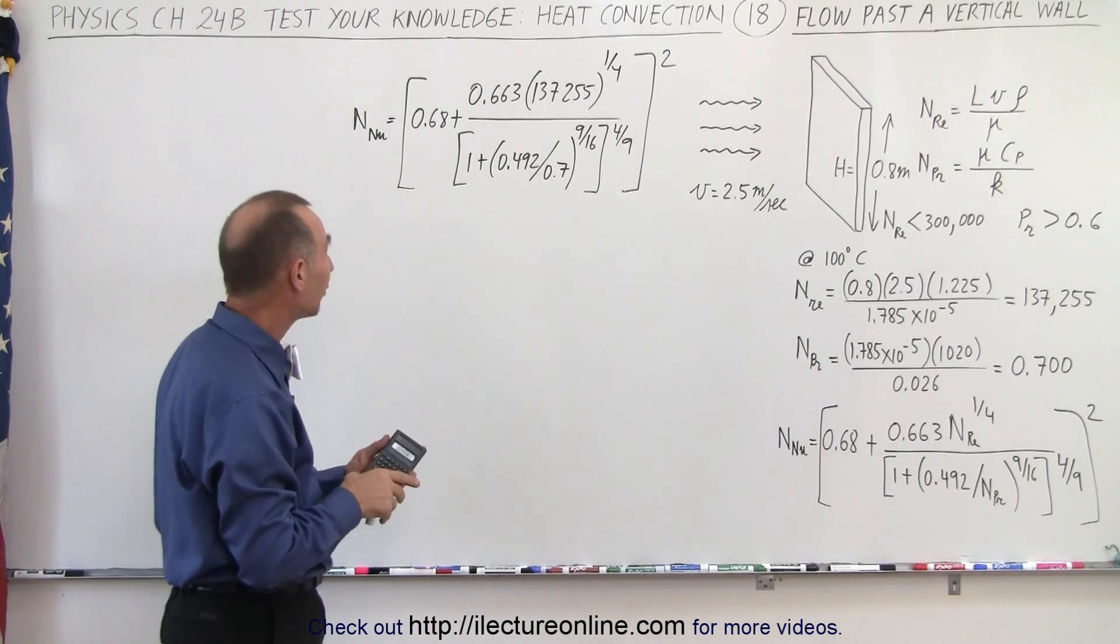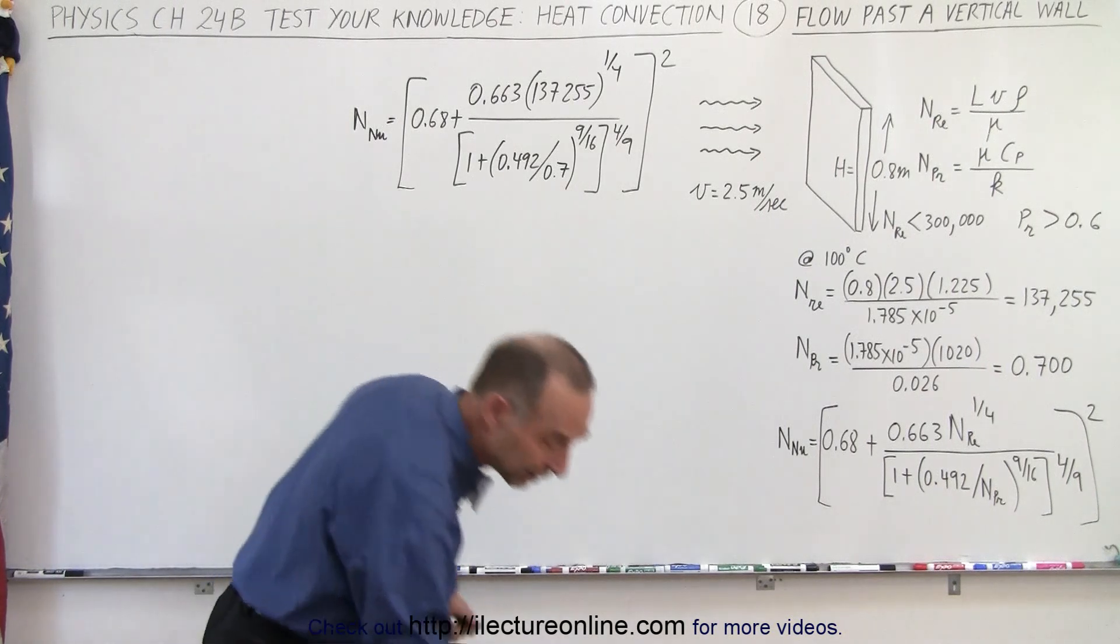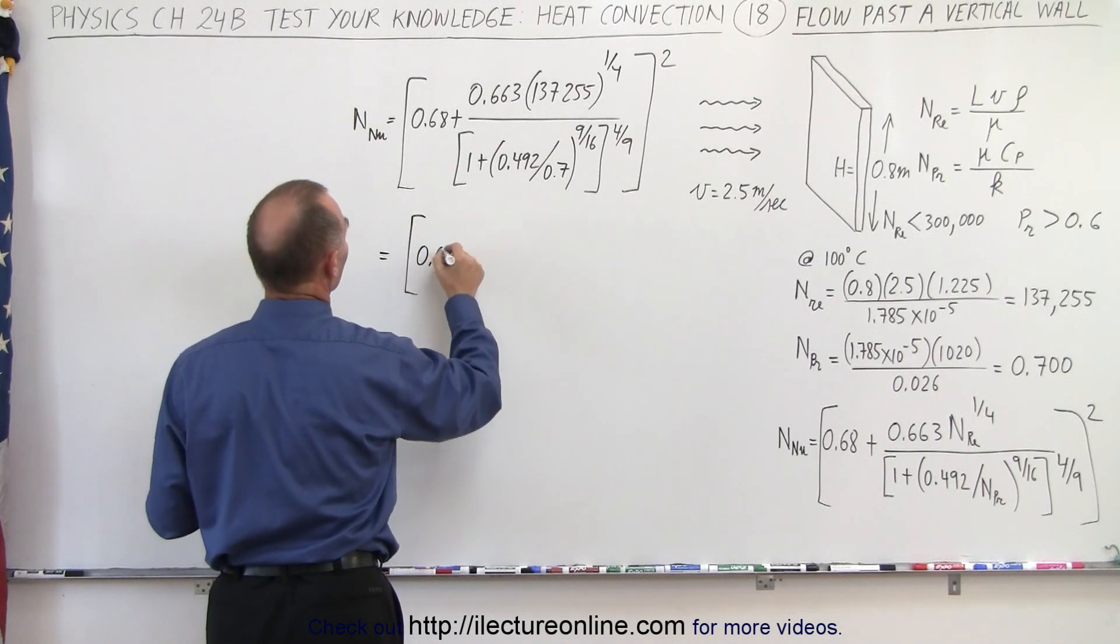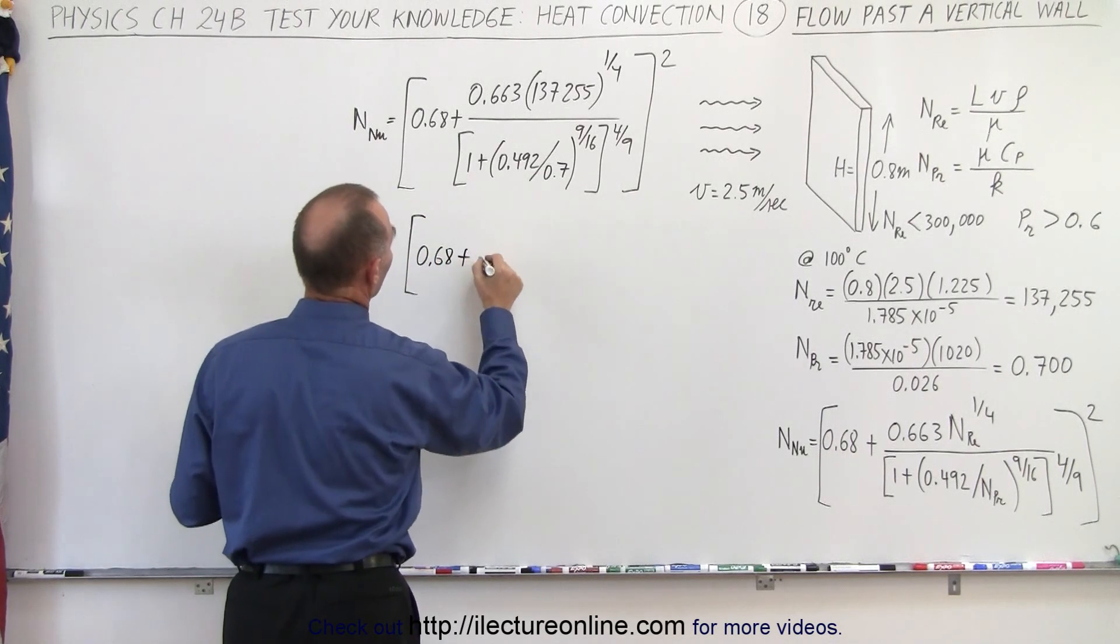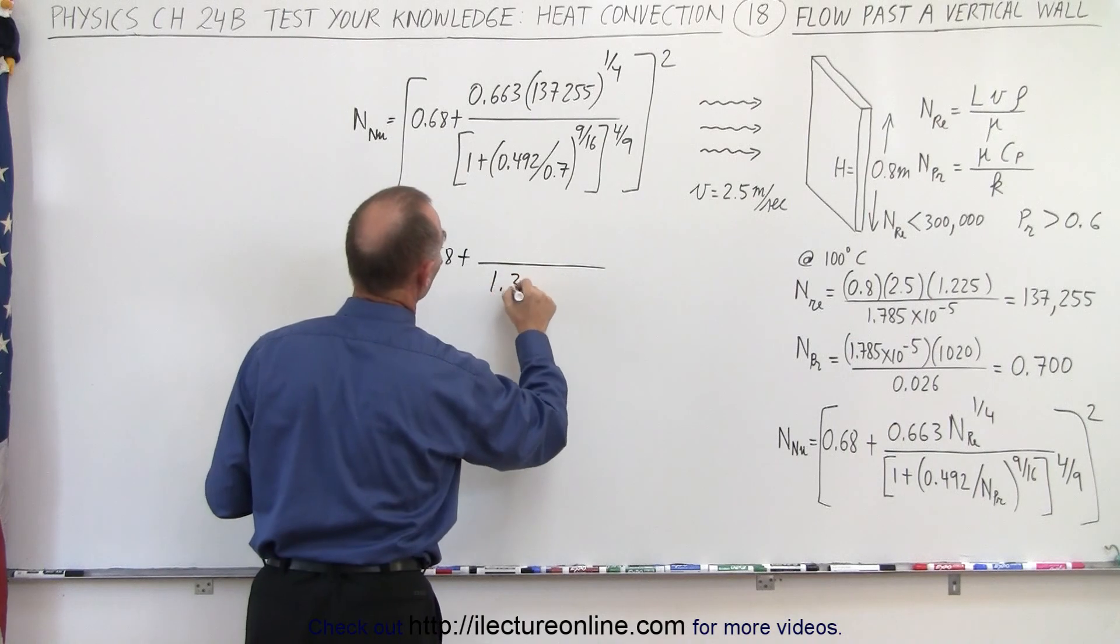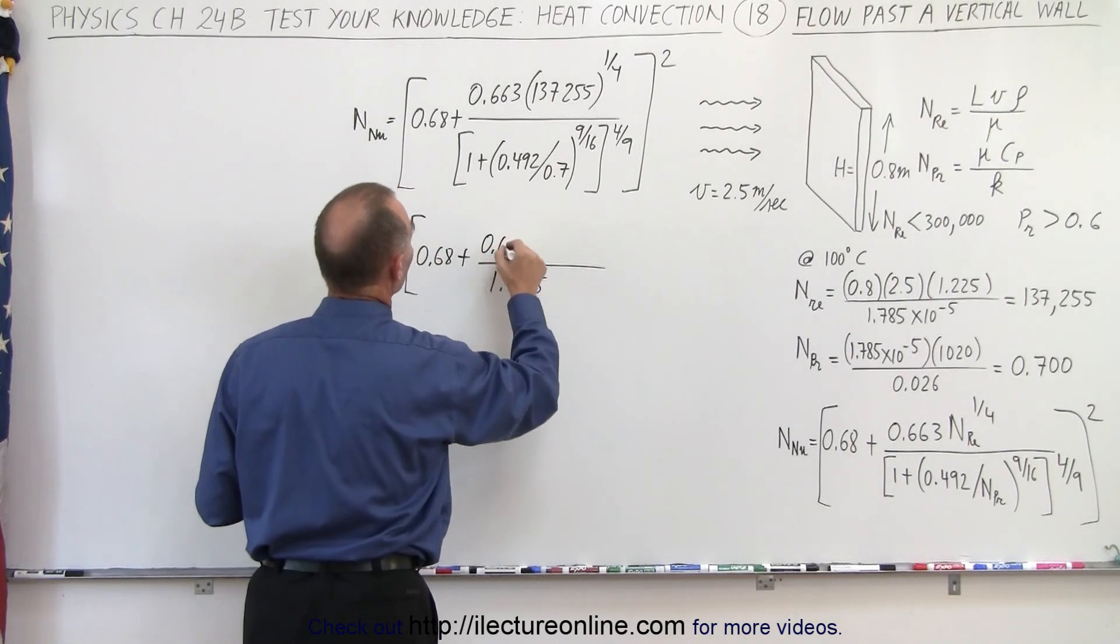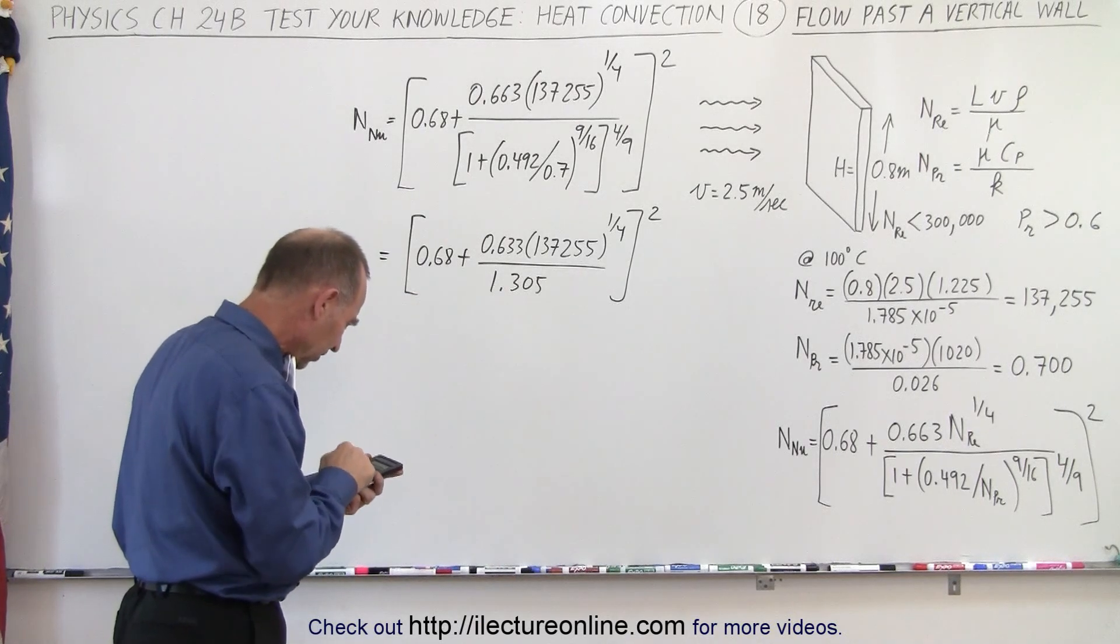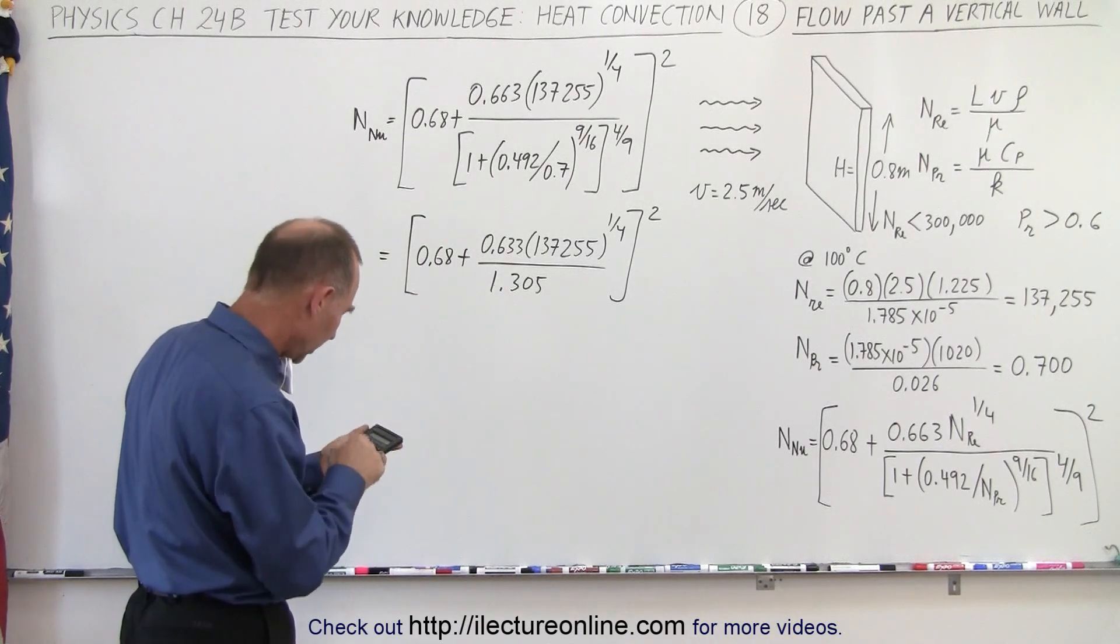Let's rewrite that a little bit. This is equal to 0.68 plus in the denominator we get 1.305, so we take the inverse of that, bring it to the numerator.